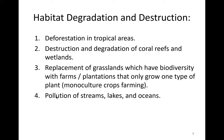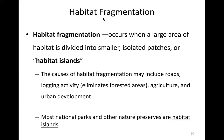Habitat threats also include pollution of streams, lakes, and oceans. Habitat fragmentation occurs when a large area of habitat is divided into smaller, isolated patches or habitat islands. Causes of habitat fragmentation include constructing roads, logging activity (cutting down trees), agriculture, and urban development.